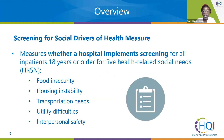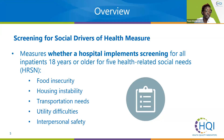The screening for social drivers measure focuses on identifying health-related social needs, or HRSNs. This measure looks at the rate of inpatient admissions for patients who are 18 and over who have been screened for all five HRSNs: food insecurity, housing instability, transportation needs, utility difficulties, and interpersonal safety.